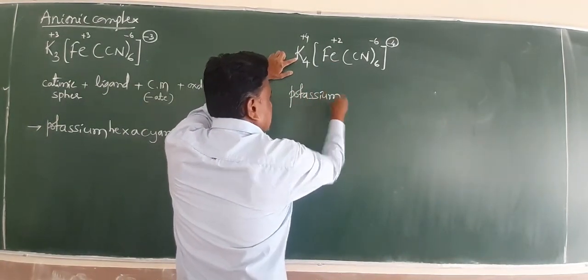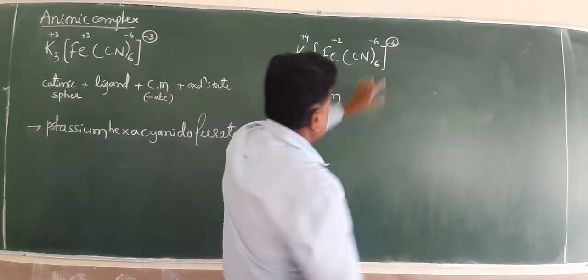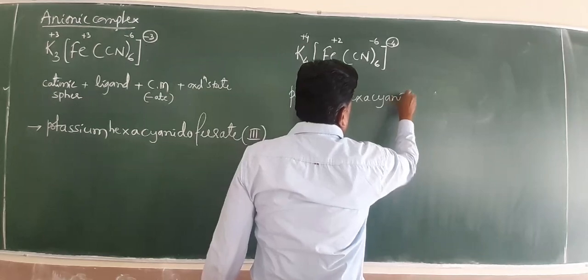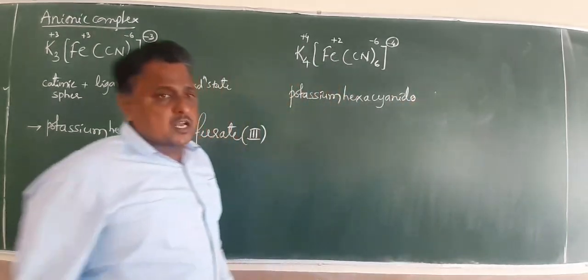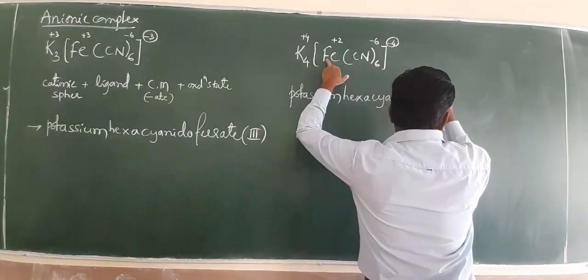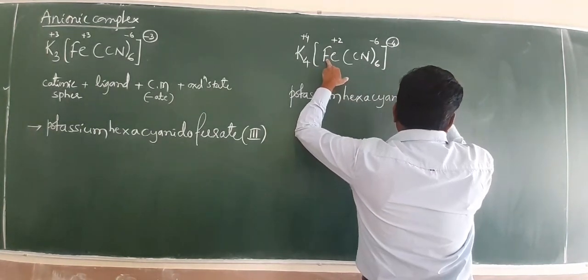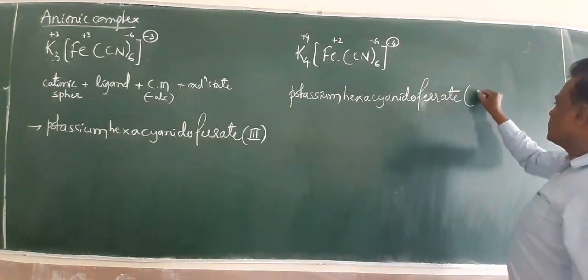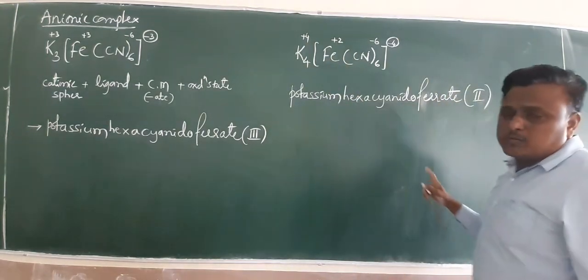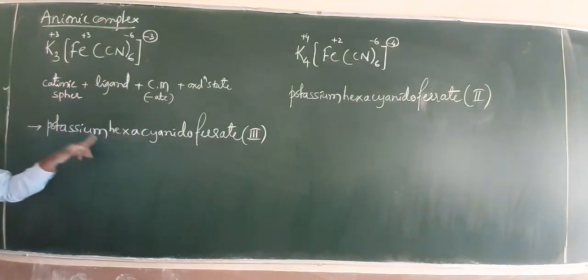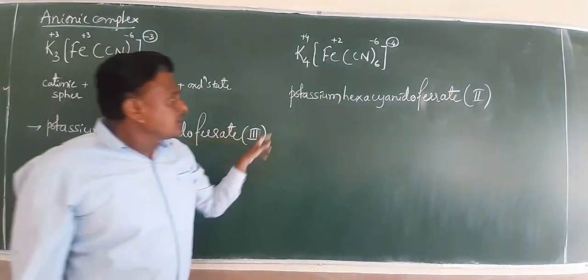The net charge is minus 4. Anionic complex. Potassium hexacyanido. End up with ate, ferrate. Oxidation is 3.